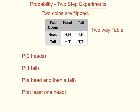A two-step experiment means you're doing more than one thing. For example, I might be flipping two coins. This table here shows the outcomes. I can get a head with the first coin and a head with the second, a tail with the first coin and a head with the second, head and tail, or tail and tail. There are four outcomes, and so I can use that to help me work out probabilities.